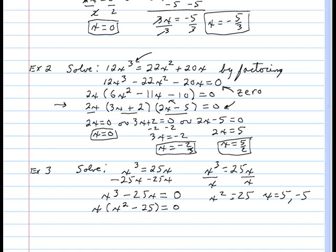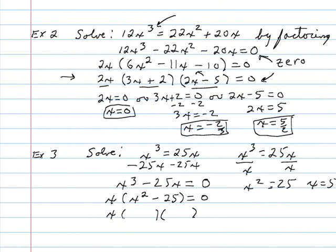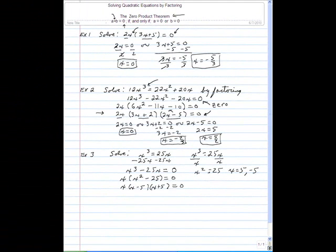Now notice that this second factor on the left is a difference of squares. x squared is a square, 25 is a square, and the minus is a difference. A difference of squares always factors into a product of conjugates. So I write x minus 5 times its conjugate x plus 5 equals zero. When you multiply the first terms, you get x squared. When you multiply the last terms, you get negative 25. The outside product is positive 5x, the inside product is negative 5x, and when you add them up that gives you a center term of zero, and we had no center term. So that is correct.